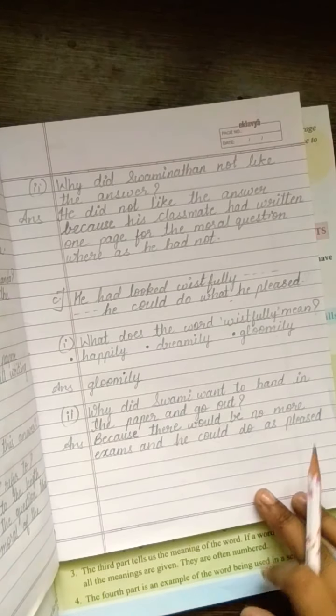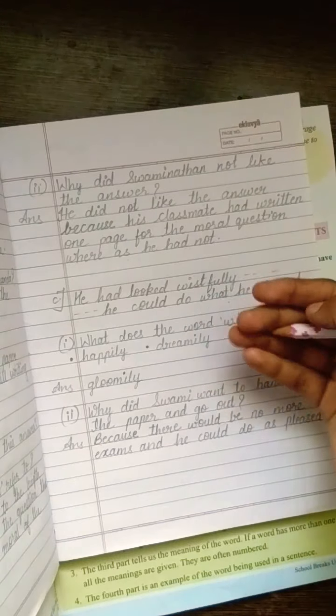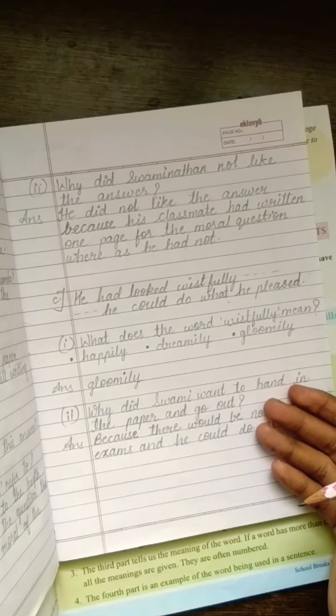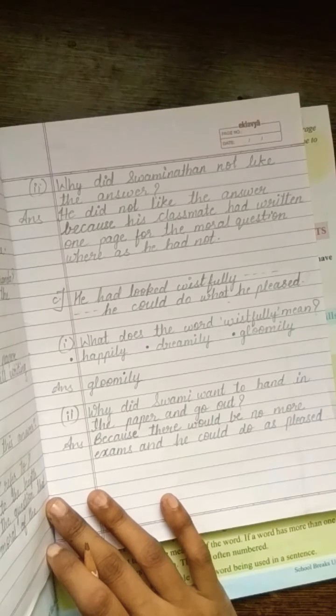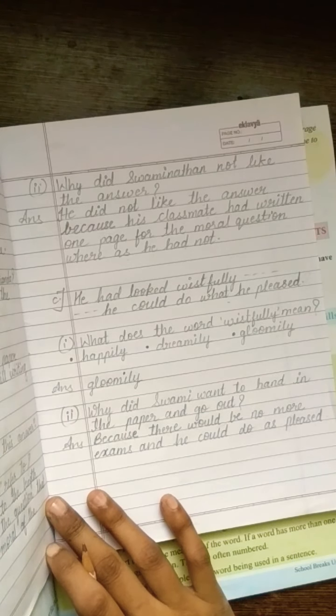So, students, what you have to do? You have to write in this way. Extract and write question 1 and 2 with their answers in your English CW book. Okay? Bye-bye. Read along with the video.